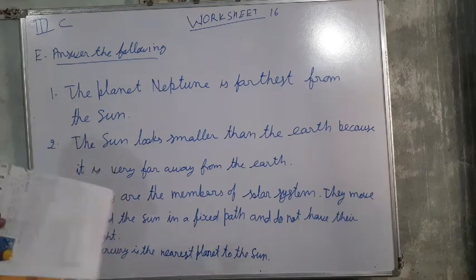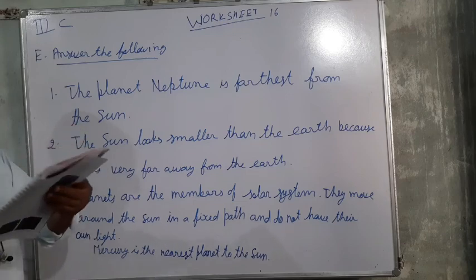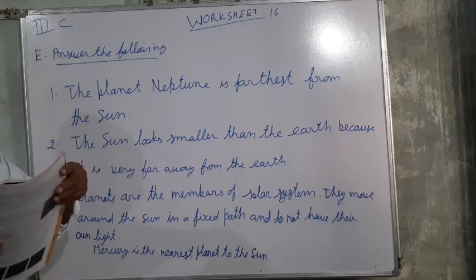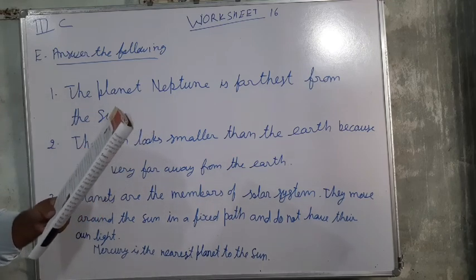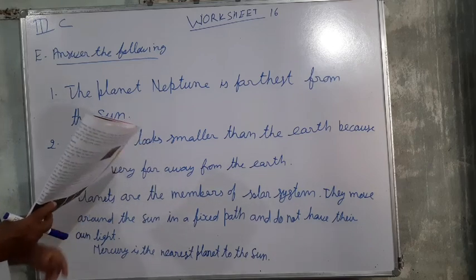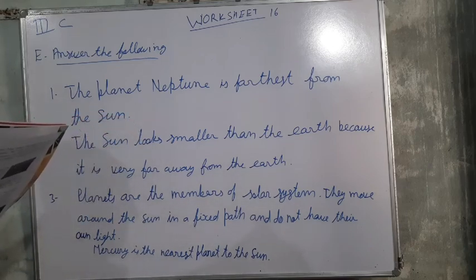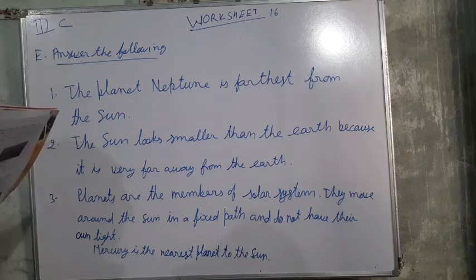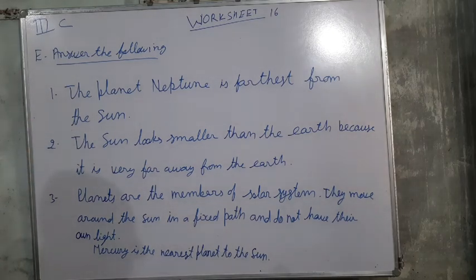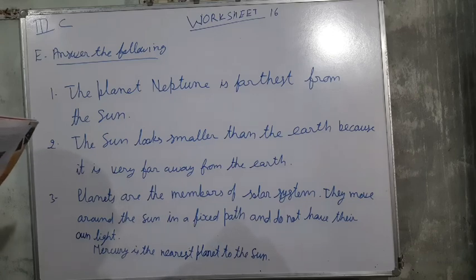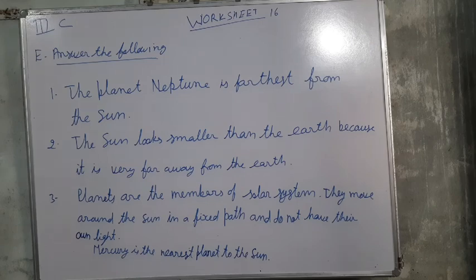Before writing this question, see the diagram of the solar system given on page number 86. In the solar system diagram, you will find that Mercury is the closest planet to the sun, while Neptune is the farthest from the sun.